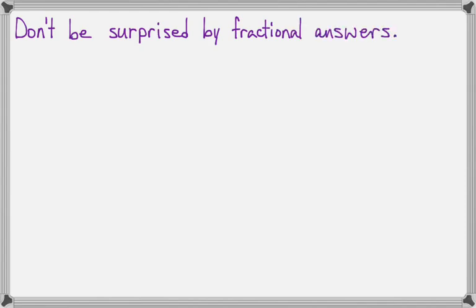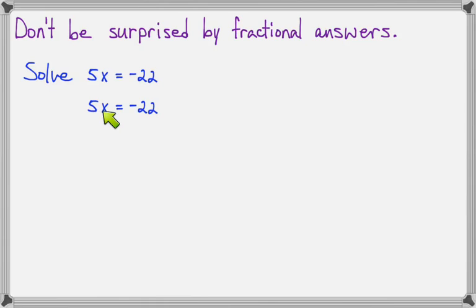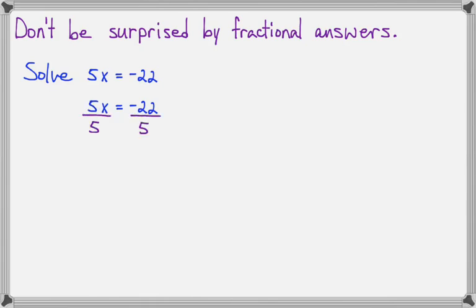I want you to not be surprised by fractional answers. Every answer is not going to be a whole number, and that's okay. Let's look at a couple where we don't get a whole number. Let's solve 5 times x equals negative 22. Now you know that can't be a whole number, because there's not a whole number that when you multiply it by 5, you get negative 22 — multiples of 5 go 20, 25, 30. So to solve it, all we're going to do is divide both sides by that coefficient, and that's going to cancel out the 5s and leave us with x equals negative 22 over 5, which is a fraction, and that's okay.